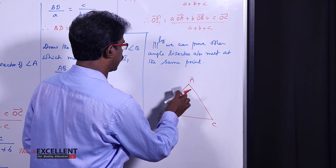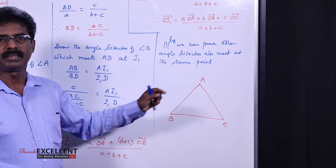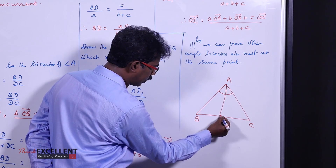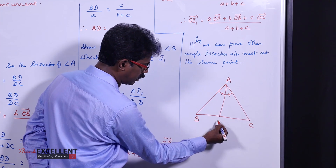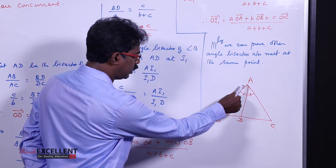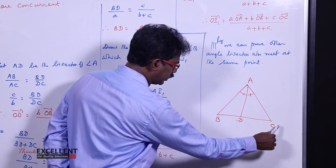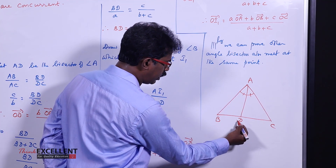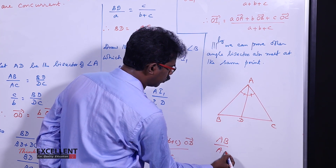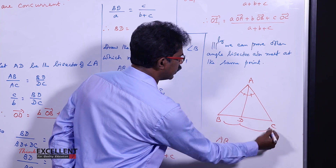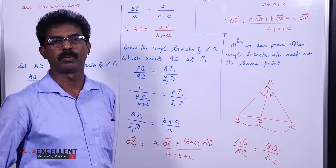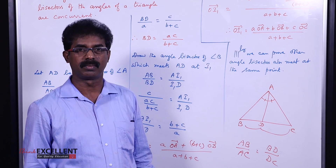For angle bisectors: if ABC is a triangle and you draw a bisector for angle A, dividing it into two equal parts, let it meet BC at D. Then by the angle bisector theorem, AB by AC is equal to BD by DC. So AB by AC equals BD by DC.